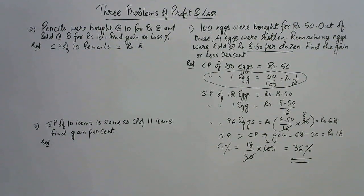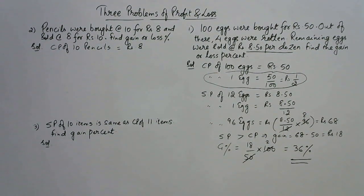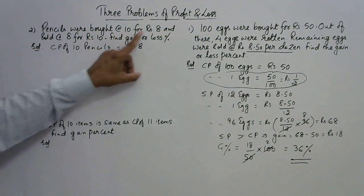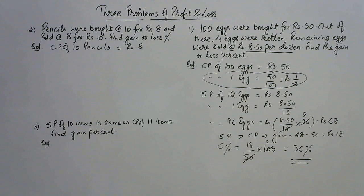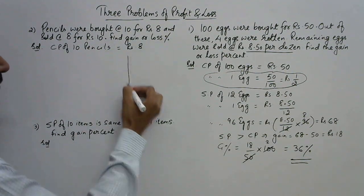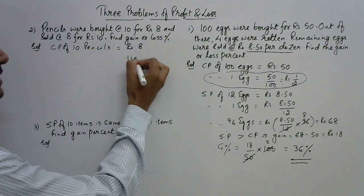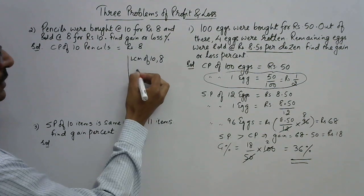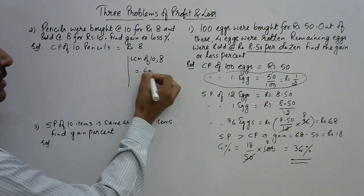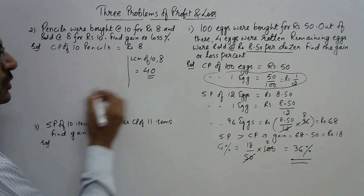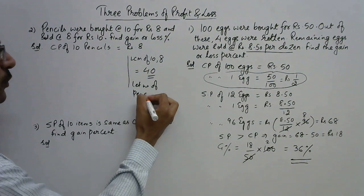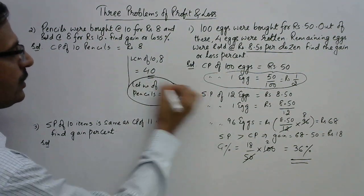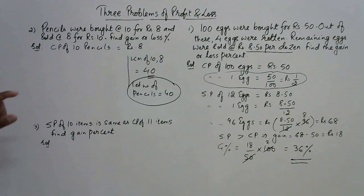The cost price of 10 pencils is rupees 8. Whenever we are given two conditions like 10 for rupees 8 and 8 for rupees 10, we need to assume the total number of pencils. Take the LCM of 10 and 8, which is 40. So let the number of pencils equal 40. This is one key step you need to remember for solving these types of questions.